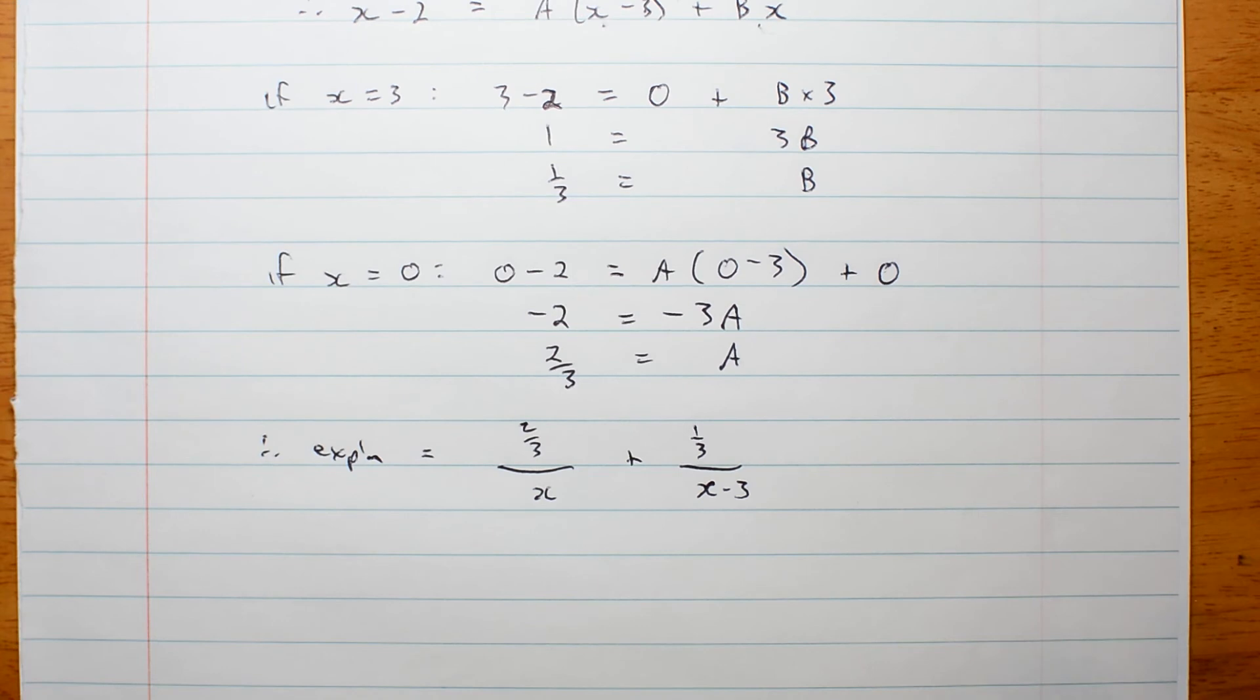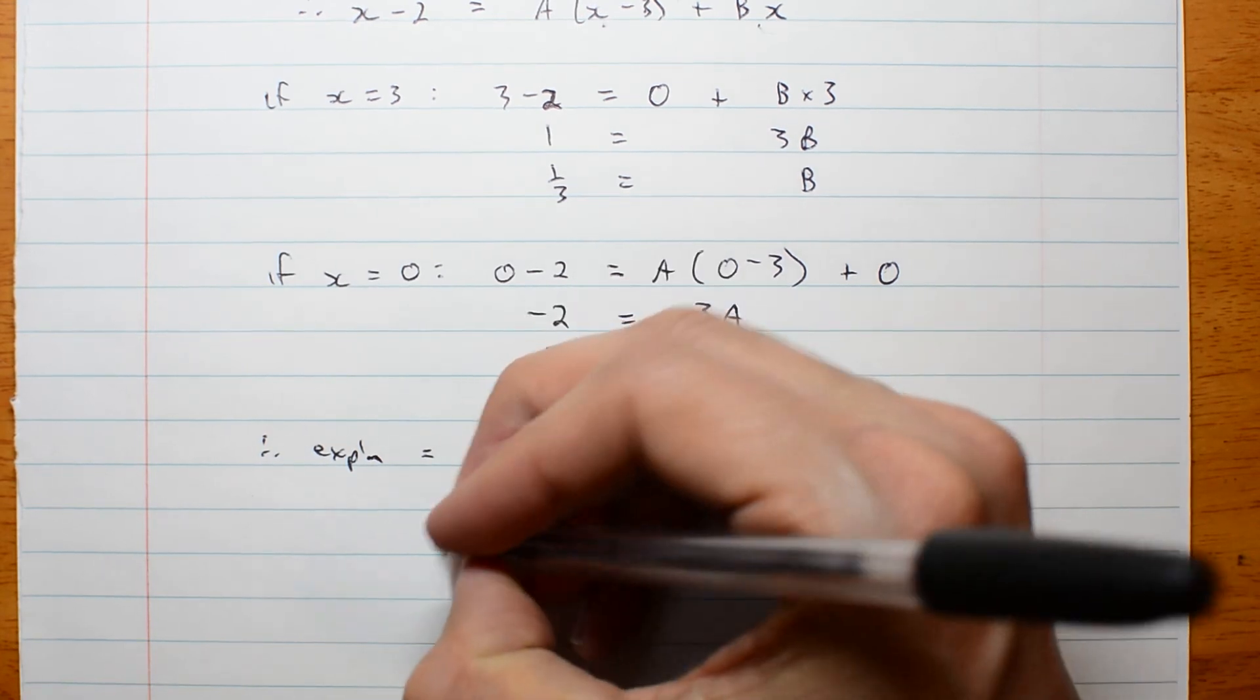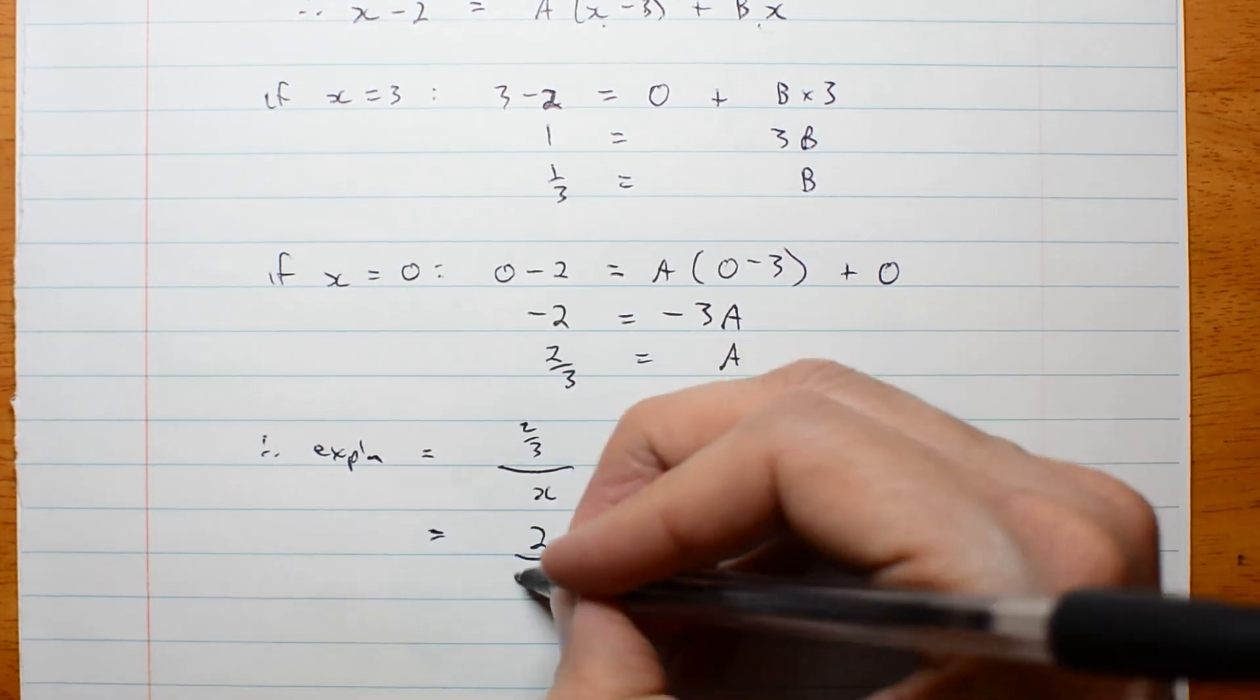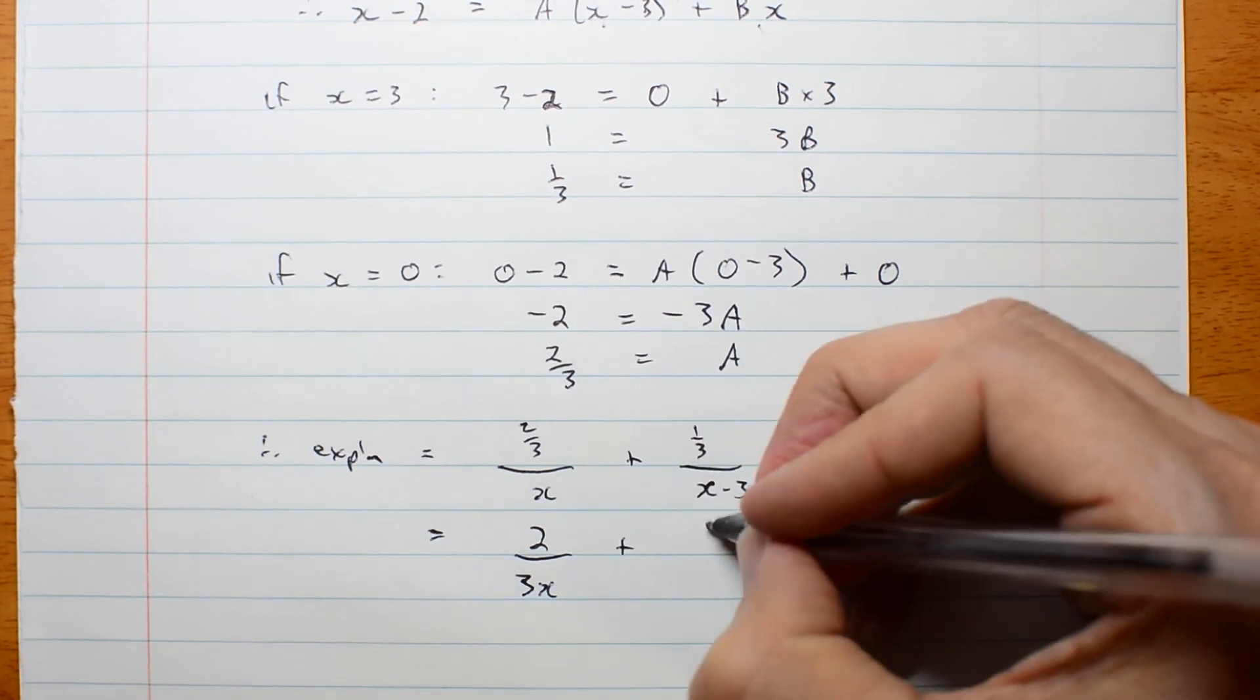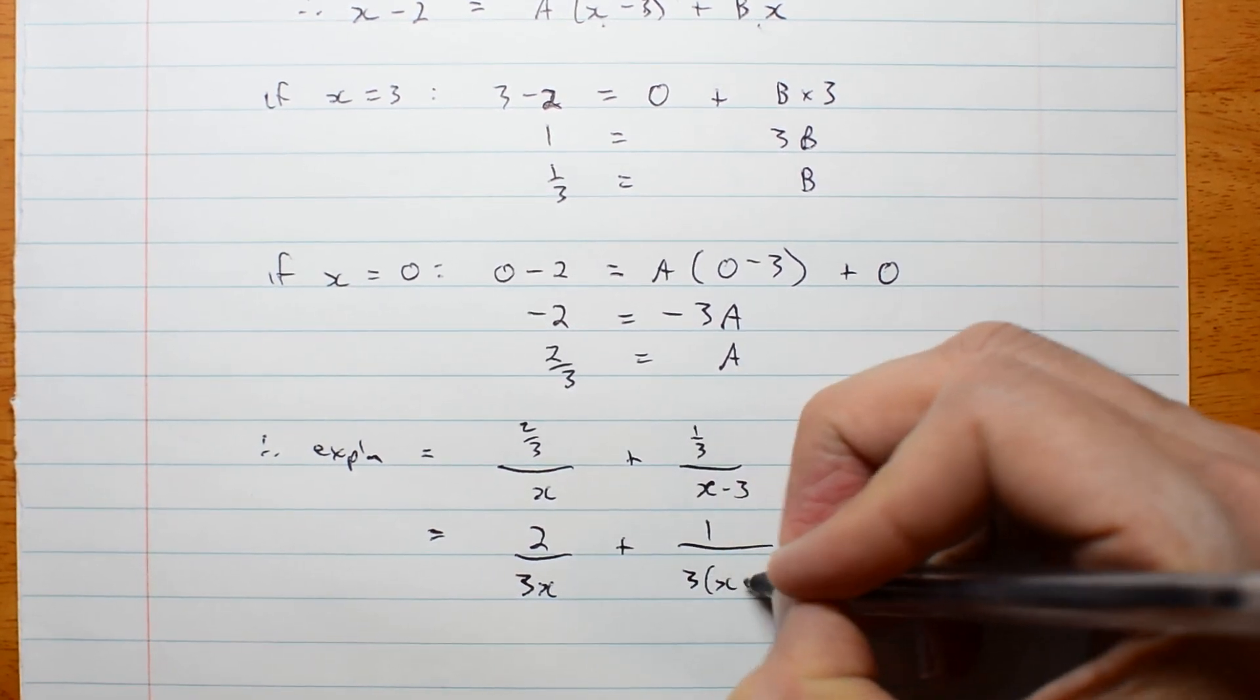Now I can simplify that a little bit. That is 2 over 3x plus 1 over 3x minus 3.